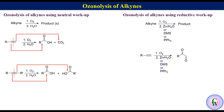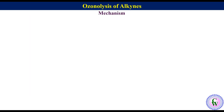To draw the product of this reaction for a terminal alkyne, just convert the triple bond to a single bond and connect each alkyne carbon with oxygen through a double bond. If the alkyne is internal, then the product will be an alpha-diketone.